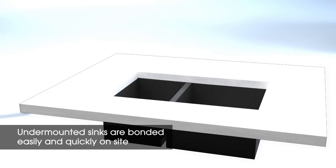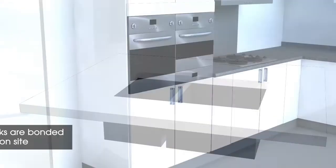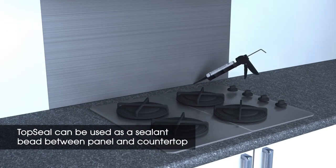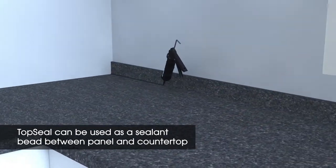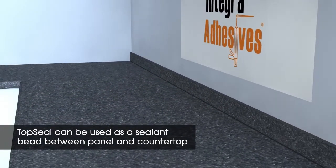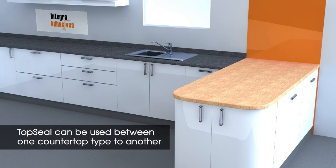Undermounted sinks are bonded easily and quickly on site. It can then be used as a sealant bead between panel and countertop or between one countertop type to another, for example, quartz to wood.